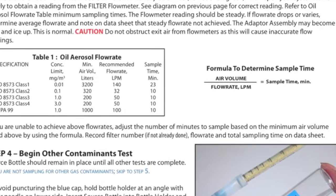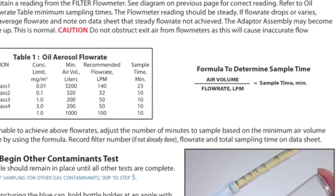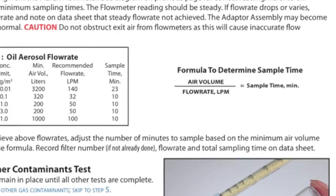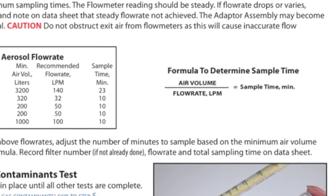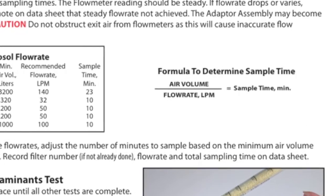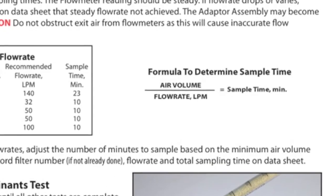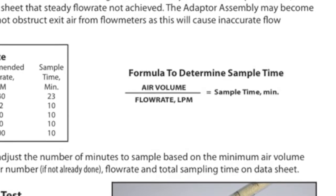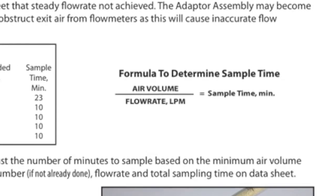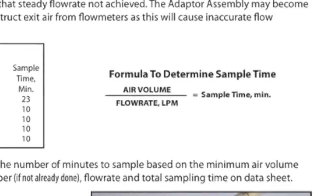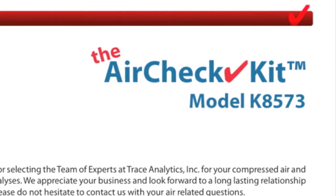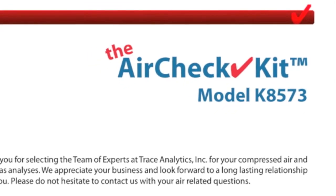If you're unable to obtain the recommended flow rate, then take the required air volume from table one, divide it by the flow rate that you can obtain, and this will give you the correct sample time in minutes. The formula is noted in the sampling instructions.